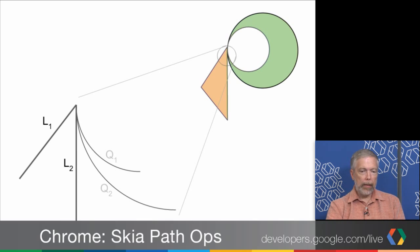When I sort the pair of lines, the answer is straightforward. The direction of the line allows me to know which line is to the left of the other, using a simple cross product. For the line and the quadratic, I can't use that trick because the initial tangent of the quadratic is the same as the line. But I can use the fact that the quadratic curls away from the line to know whether it curls to the right or the left of the line.